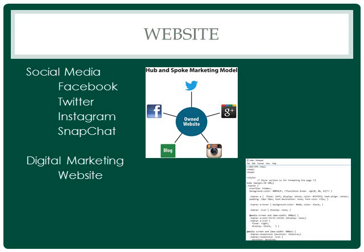Today, an organization's website is considered an important piece of real estate, and all activities across social media are connected back to that central point of information. This hub-and-spoke configuration — with the website at the middle and all social media properties directing traffic back to this one source — is a very important aspect that is overlooked by most textbooks.